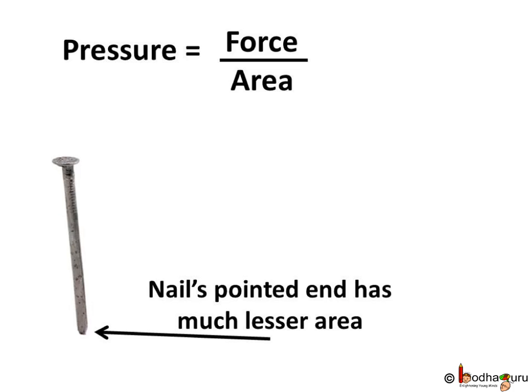Here we see area is in the denominator. What does it mean? It means smaller the area, larger the pressure on the surface for the same applied force. This means pressure is inversely proportional to area. Decrease the area and pressure will increase for the same force.